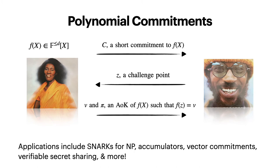We also show a lot of applications of our inner product arguments in our paper. For example, we build a polynomial commitment. The idea is that Alice knows some polynomial over a finite field of degree at most D. She is able to make a short commitment C to F of X and send that to Bob, who will then send a challenge point Z. Alice responds with an evaluation V and an evaluation proof pi, which is an argument of knowledge of F of X such that F of Z is equal to V. Applications of polynomial commitments include SNARKs for NP, accumulators, vector commitments, verifiable secret sharing, and a lot more.